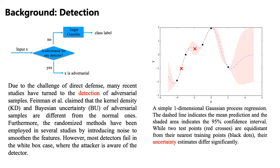Background: Detection. Due to the challenge of direct defense, many recent studies have turned to the detection of adversarial samples. Feinman et al. claimed that the kernel density and Bayesian uncertainty of adversarial samples differ from normal ones. The figure on the right illustrates how Bayesian uncertainty works — the dashed line indicates the mean prediction and the shaded area indicates the 95% confidence interval. While two test points (red crosses) are equidistant from their nearest training points (black dots), their uncertainty estimates differ significantly. Furthermore, randomized methods have been employed in several studies by introducing noise to smooth the features. However, most detectors fail in the white-box case, where the attacker is aware of the detector.